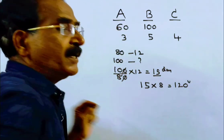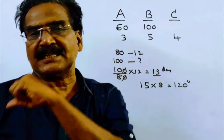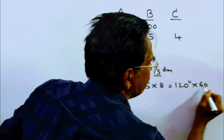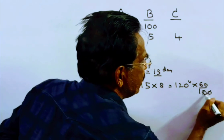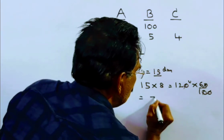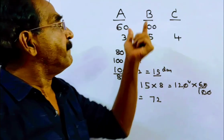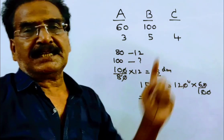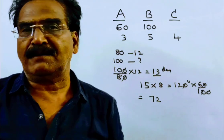Now the question is in how many days B and C can do 60% of the work. Friends, 60% of 120 is equal to 72. So here the question is in how many days B and C can do 72 units of work. Friends, B and C together can do 9 units of work per day, 5 plus 4 is 9 units of work per day.